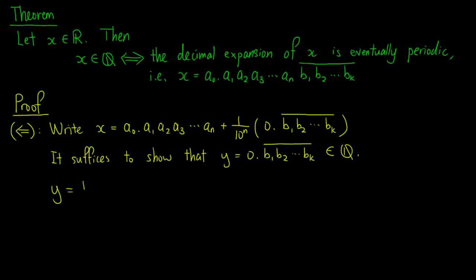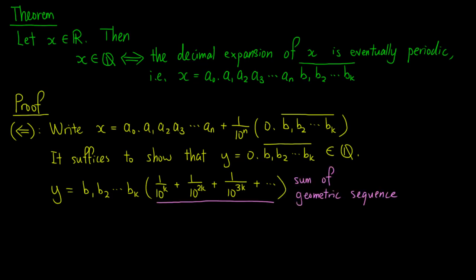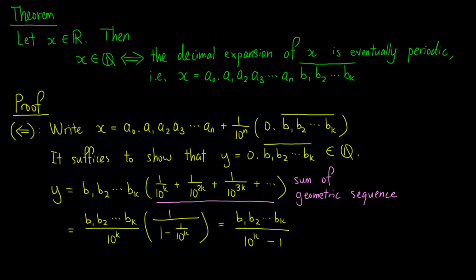Now, we can write y as b1, b2, up to bk times (1 over 10^k plus 1 over 10^{2k} plus 1 over 10^{3k} and so on), because the digits b1 to bk repeat themselves every k digits. The sum inside the bracket is a geometric series, so we can write y as (b1b2...bk) over 10^k times 1 over (1 minus 1 over 10^k), which equals (b1b2...bk) over (10^k minus 1), and this is rational.